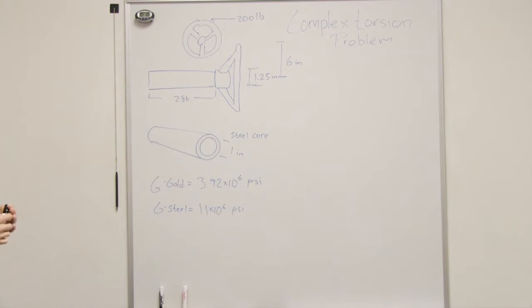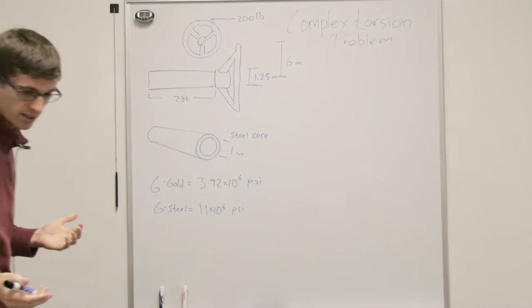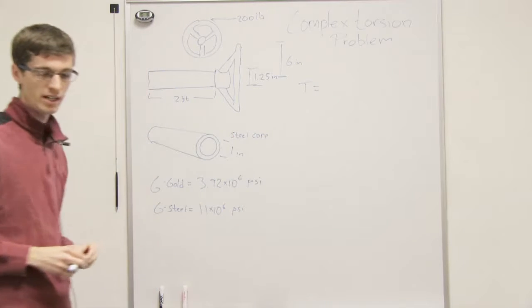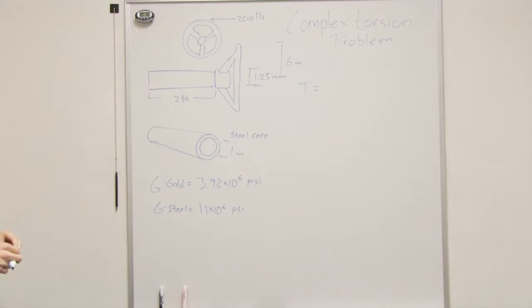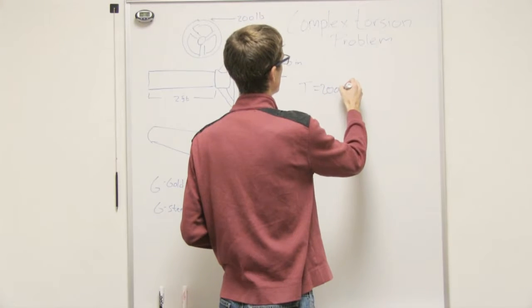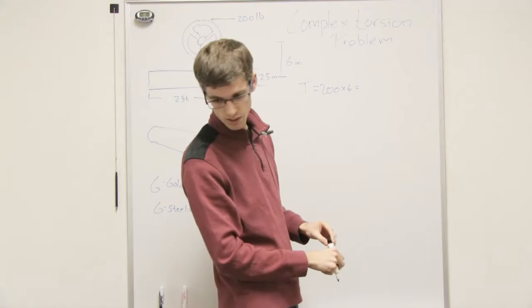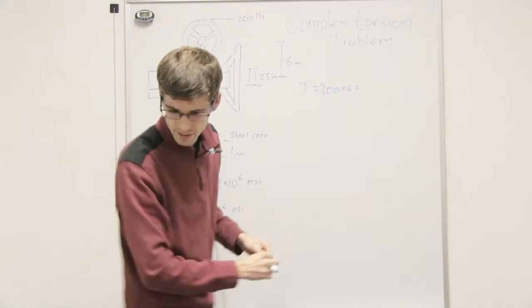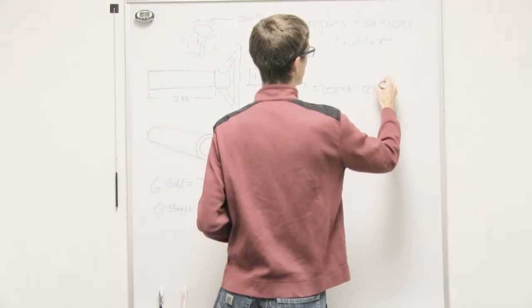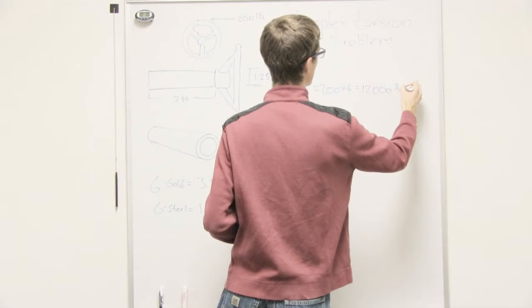Okay, so the first thing I want to do is I want to find out how much torque that is, that's easy. The torque is T equals the force times the distance, and so that's 200 times 6, that's 1,200 pound inches.